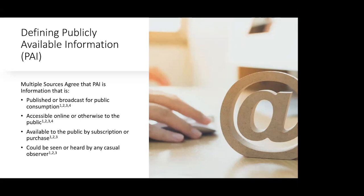Publicly available information, through a variety of sources, is information that's published and broadcast for public consumption. It's accessible online or otherwise to the public — in today's day and age, the majority of when people reference open source and PAI, they are talking about internet-based online information. It is available to the public by subscription or purchase, though the purchase point is subject to debate. Today we'll discuss anything that relates to PAI, including those tools and purchased data as part of our overview.